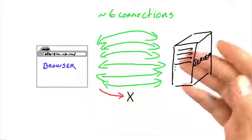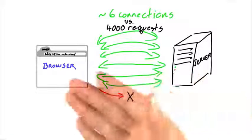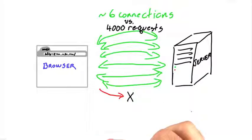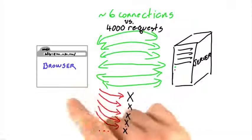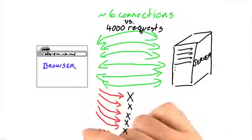So for instance, if you have 4,000 pending requests and only six connections are available, all the other requests get stacked until something gives.